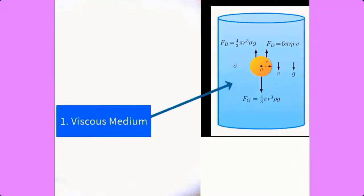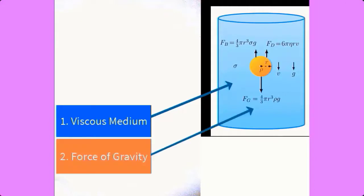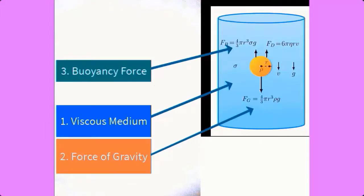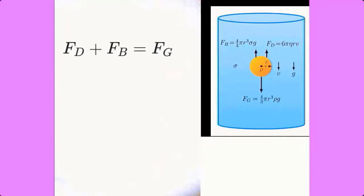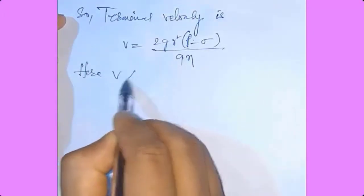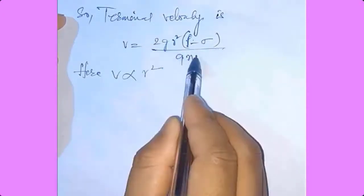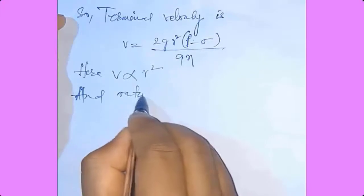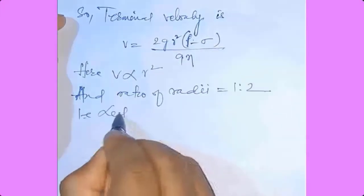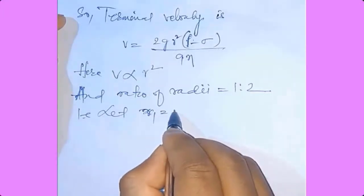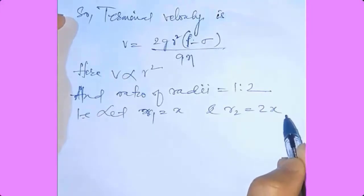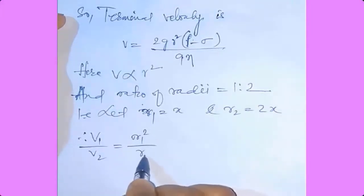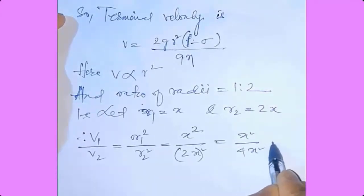In a viscous medium, a particle is falling. The particle will experience gravity downward, buoyancy force upward, and a drag force upward. For terminal velocity, these forces balance. The terminal velocity is directly proportional to R squared, where R is the radius of the particle. Let R1 equals x and R2 equals 2x. Then the ratio of velocities V1 to V2 equals R1 squared divided by R2 squared equals x squared divided by 4x squared equals 1 to 4.